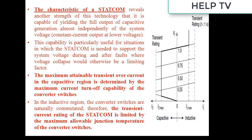This capability is particularly useful for situations in which the STATCOM is needed to support the system voltage during and after faults where voltage collapse would otherwise be a limiting factor. The maximum attainable transient overcurrent in the capacitive region is determined by the maximum current turn-off capability of the converter switches. In the inductive region, the converter switches are naturally commutated; therefore, the transient current rating of the STATCOM is limited by the maximum allowable junction temperature of the converter switches.